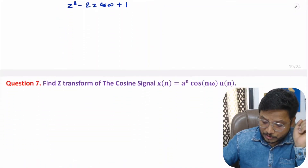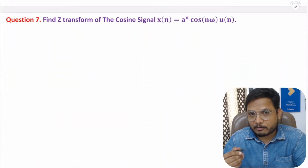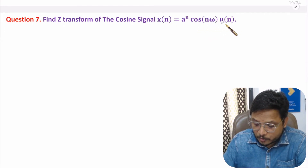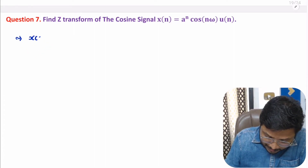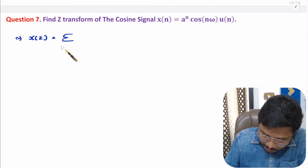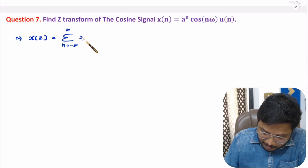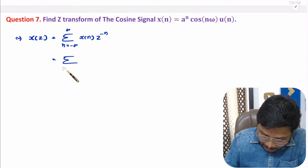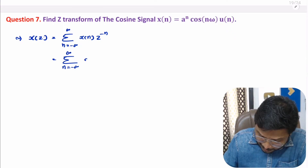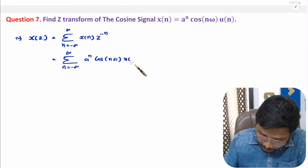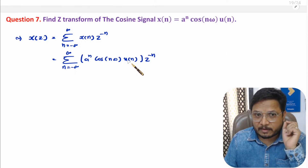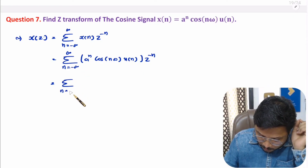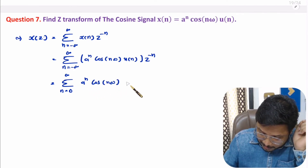Now I will solve the last question of this video. In my earlier question, I solved the Z-transform of cos(ωN) times U of N. Now I will multiply A to the power N along with this cosine function. Writing the basic definition of Z-transform: X of Z equals summation where N ranges from minus infinity to plus infinity of X of N into Z to the power minus N. Substituting X of N as A to the power N times cos(Nω) times U of N, and placing the limit of U of N from 0 to positive infinity, then we write A to the power N times cos(Nω) times Z to the power minus N.